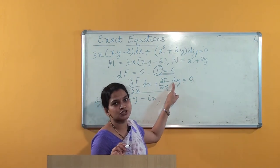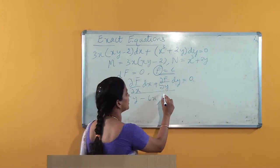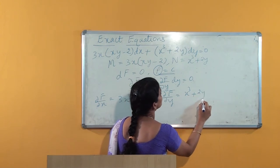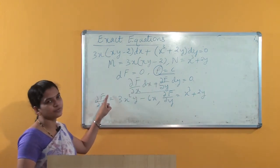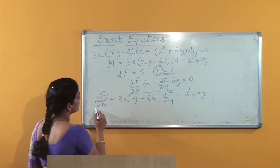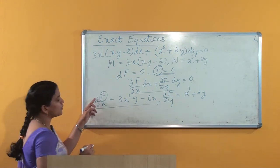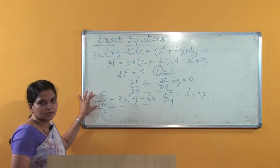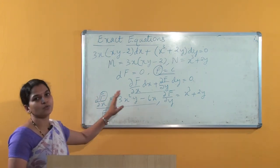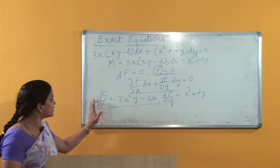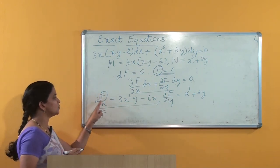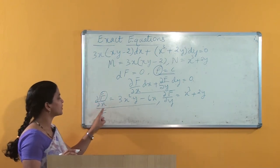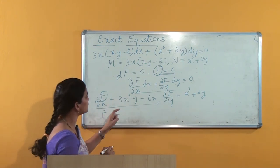Comparing the coefficient of dx, we get ∂f/∂x = 3x²y - 6x. Similarly, comparing the coefficient of dy we get ∂f/∂y = N, that is x³ + 2y. So we need to find f. Consider ∂f/∂x as a function of x and y; we integrate this equation with respect to x keeping y constant. By integrating we get f = integral with respect to x.